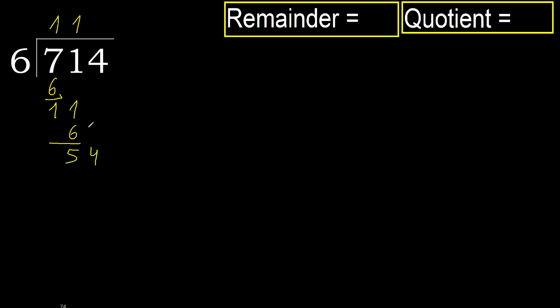54 — 6 multiplied by 9 is 54, which is not greater. Subtract. Next.